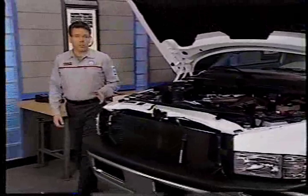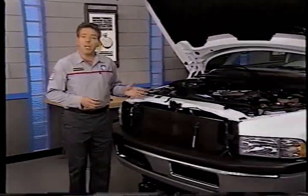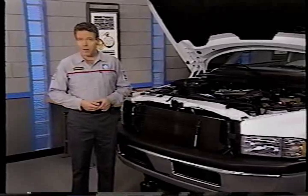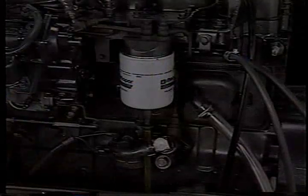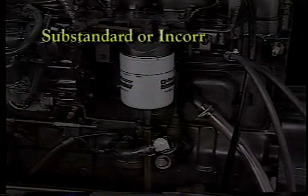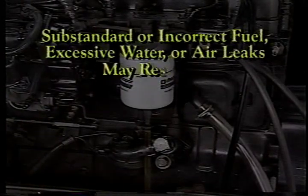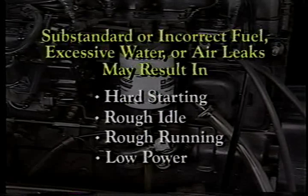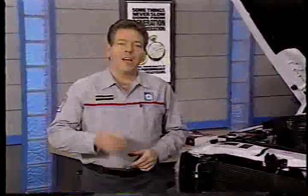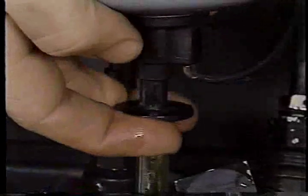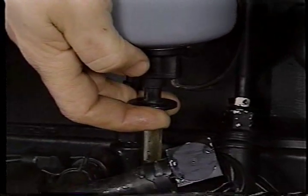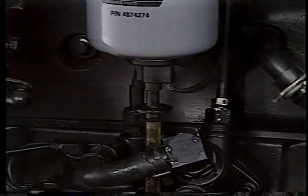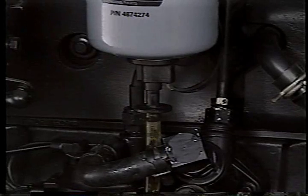When checking the fuel system, you'll first need to determine if the injection pump is being provided with good quality fuel in sufficient quantity. A fuel delivery system that is compromised by substandard or incorrect fuel, excessive water, or air leaks may result in hard starting, rough idle, rough running, and low power. Advise customers to follow the fuel recommendations in their owner's manuals, and to check for water with the drain valve at the bottom of the water-fuel separator — they should check and drain it once a month.